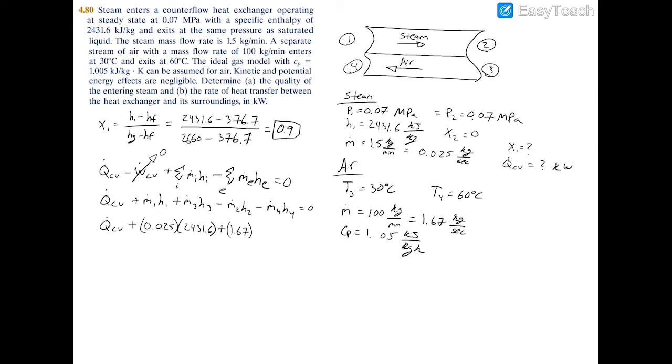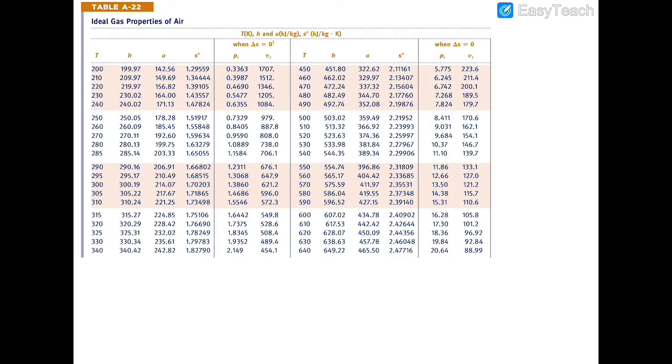And now we need to find h3. So at three we're told that we have 30 degrees Celsius, or in other words 303 kelvin. So if we turn to table A22, which is the ideal gas properties of air, we see that there isn't actually a 303 kelvin over here, but we do have 300 and 305 and the corresponding enthalpies. And if you interpolate, you'll have that h3 is just about 303.21, and that's kilojoules per kilogram.